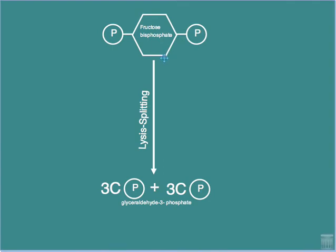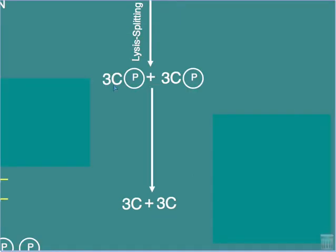This highly energized fructose bisphosphate is quite unstable, and it undergoes a breakup — a lysis — into two three-carbon phosphorylated molecules. These are termed glyceraldehyde-3-phosphate. The three-carbon phosphorylated molecules produced by the lysis each release the phosphate that was added to glucose.